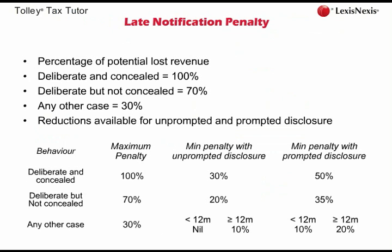Disclosure takes place where a taxpayer tells HMRC about the failure, gives HMRC reasonable help in calculating the resulting unpaid tax, and allows HMRC access to records to check the amount of unpaid tax. The actual reduction in the penalty depends on the quality of the elements of disclosure including timing, nature and extent. Increased percentages apply where the late notification relates to an offshore matter, such as income arising or assets held overseas.